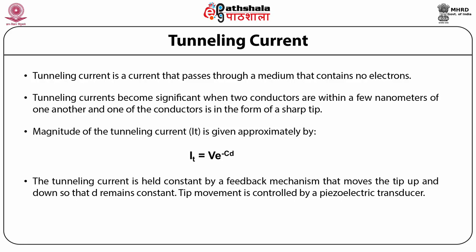The STM makes use of this extreme sensitivity to distance. The sharp tip is positioned a few angstroms from the sample surface. A small voltage is applied between the probe tip and the surface, causing electrons to tunnel across the gap. As the probe is scanned over the surface, it registers variations in the tunneling current, and the information can be processed to provide a topographical image of the surface.